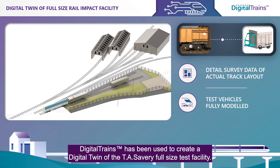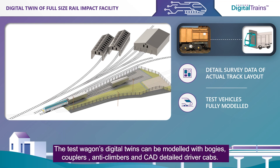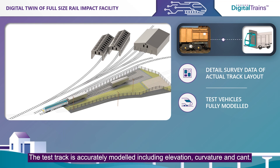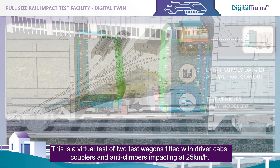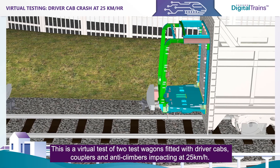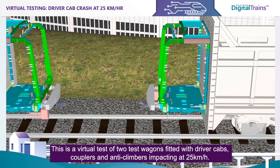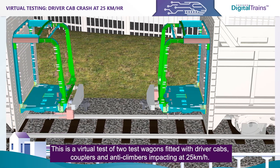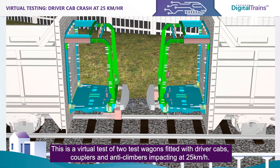Digital Trains has been used to create a digital twin of the TA Savory full-size test facility. The test wagons' digital twins can be modeled with bogies, couplers, anti-climbers, and CAD-detail driver cabs. The test track is accurately modeled including elevation, curvature, and cant. This is a virtual test of two test wagons fitted with driver cabs, couplers, and anti-climbers, impacting at 25 kilometers per hour.